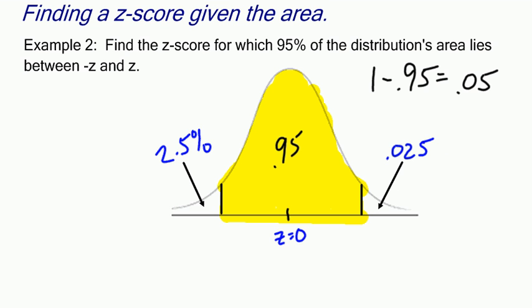Another thing to recognize is that since this is a symmetric bell-shaped curve, the negative z over here and the positive z over here will have the same values—one negative and one positive.